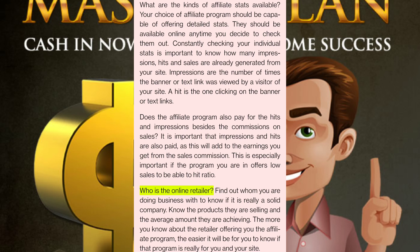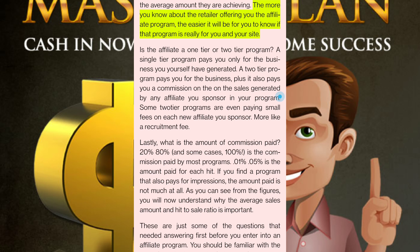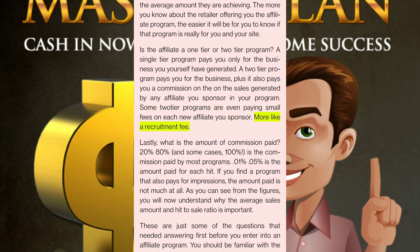Who is the online retailer? Find out whom you are doing business with to know if it is really a solid company. Know the products they are selling and the average amount they are achieving. Is the affiliate program a one-tier or two-tier program? A single-tier program pays you only for the business you yourself have generated. A two-tier program pays you for the business plus a commission on the sales generated by any affiliate you sponsor in your program. Some two-tier programs are even paying small fees on each new affiliate you sponsor — more like a recruitment fee.